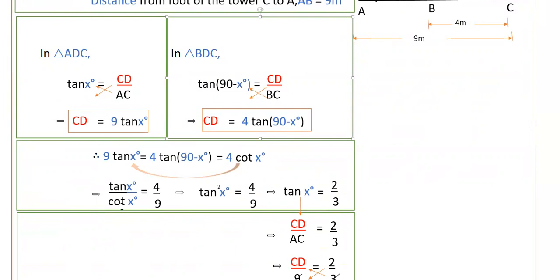So 1 by cot x is tan x. So tan x into tan x, that is tan square x degrees, is equal to 4 by 9. Therefore tan x is equal to square root of 4 by 9, that is 2 by 3.